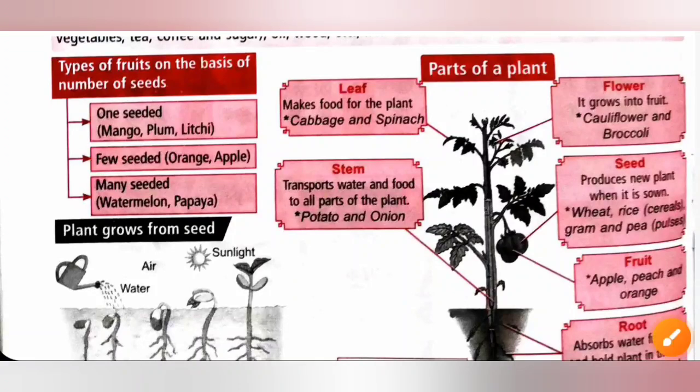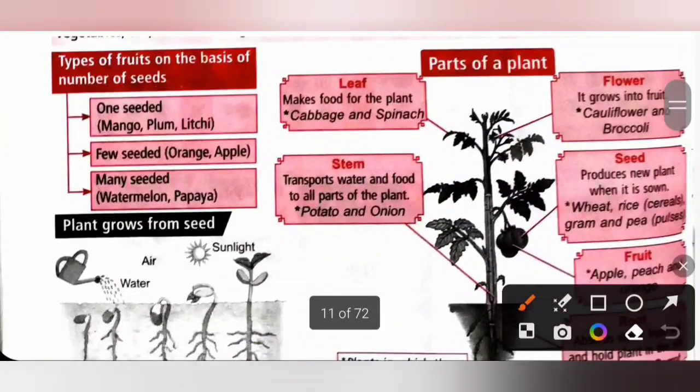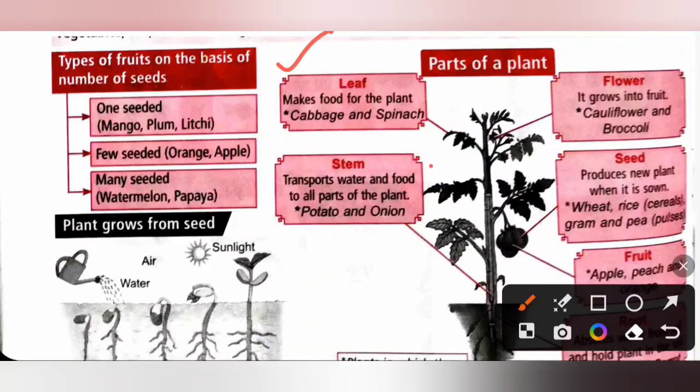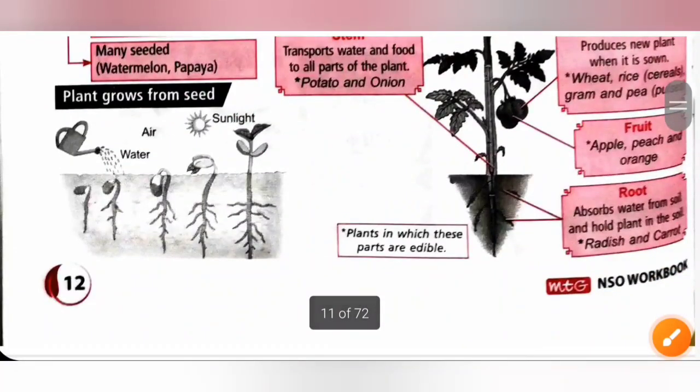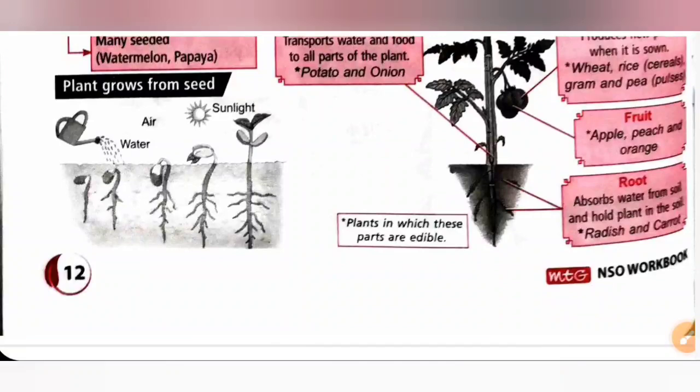There are different parts of a plant: leaf, it makes food for the plant; stem, it transports water and food to all parts of a plant; flower, it grows into fruit; seed, it produces new plant when it is sown; fruit, example apple, peach and orange; root, it fixes the plant firmly in the soil and absorbs water from soil and holds the plant in the soil.